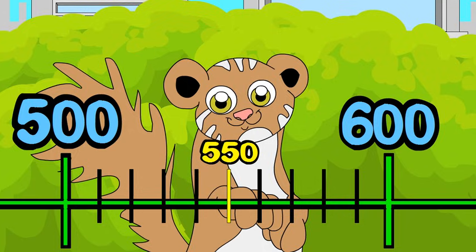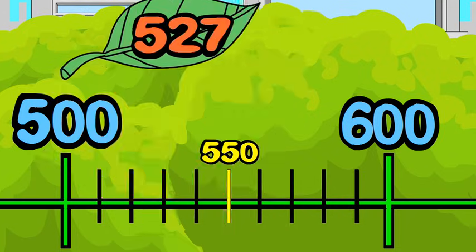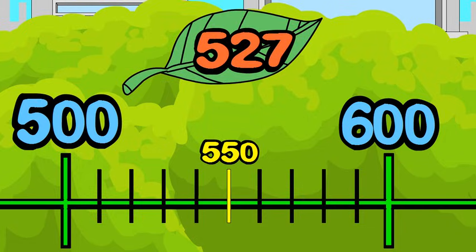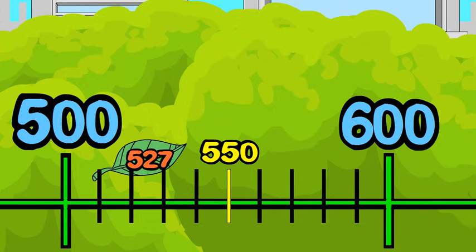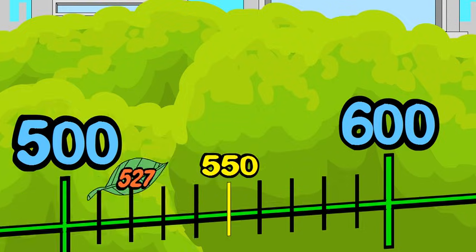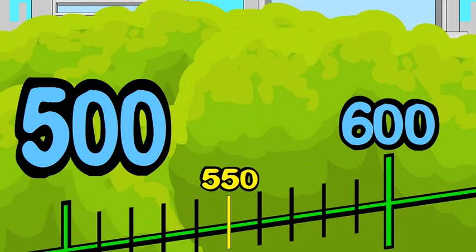Step three: locate five hundred twenty-seven on the number line. Five hundred twenty-seven is less than 550. Step four: you can now round. Five hundred twenty-seven is closer to five hundred than to six hundred, so to the nearest hundred, five hundred twenty-seven rounds down to five hundred.